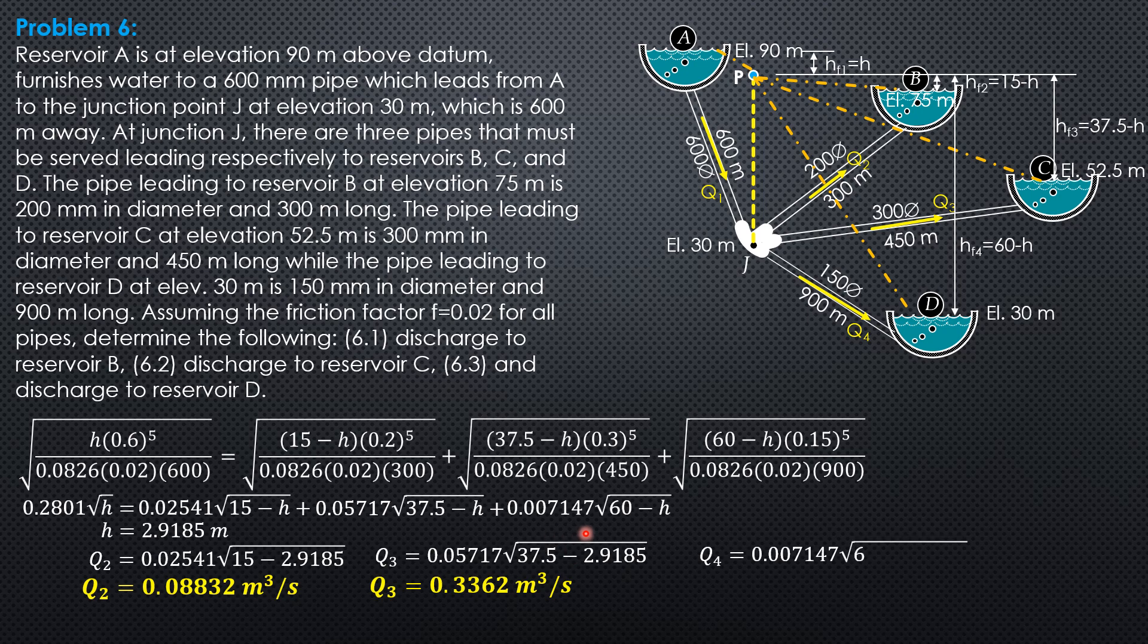Q4 is 0.007147 square root of 60 minus 2.9185, so Q4 is 0.0540 cubic meter per second. All these are inflows to the respective reservoirs. Thank you.